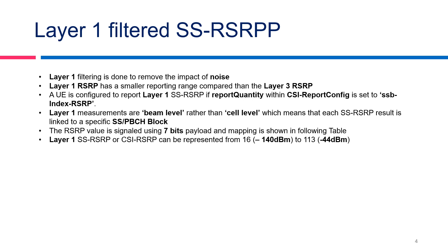Let's now discuss layer 1 filtered RSRP. The RSRP measurements done at layer 1 are filtered to remove the noise impact. The RSRP range at layer 1 has a smaller reporting range compared to layer 3 RSRP. When a UE is reporting layer 1 SS-RSRP, the report quantity within the CSI report config is set to SSB index RSRP.